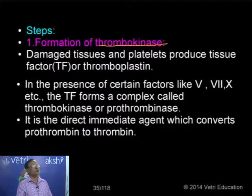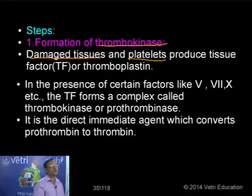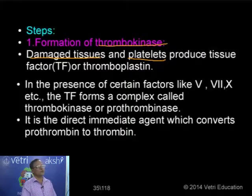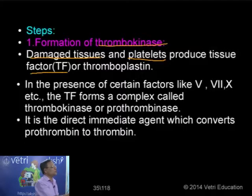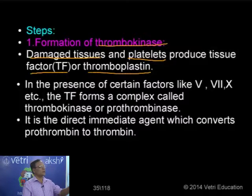At the site of injury, the tissues are damaged. So the first event is tissue damage, and at that place we also have damaged platelets. Because of the impact of force, the cells as well as the platelets are damaged. They produce one factor called TF or tissue factor, also called thromboplastin — a lipoprotein structure. The first step is the formation of thromboplastin.